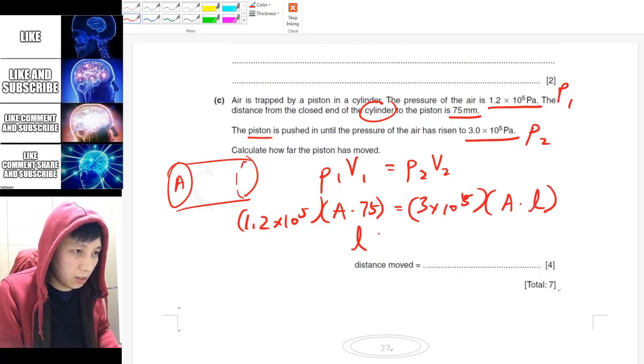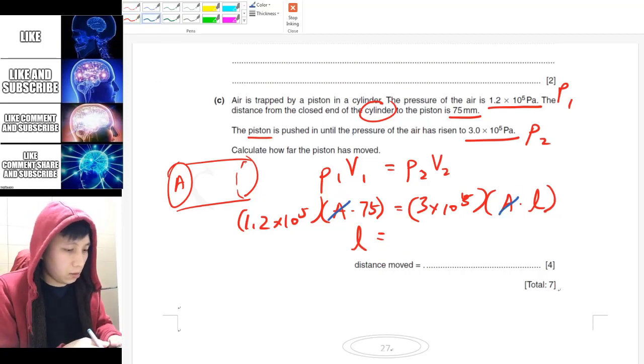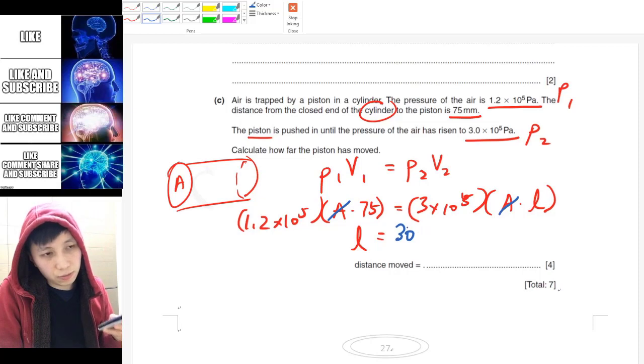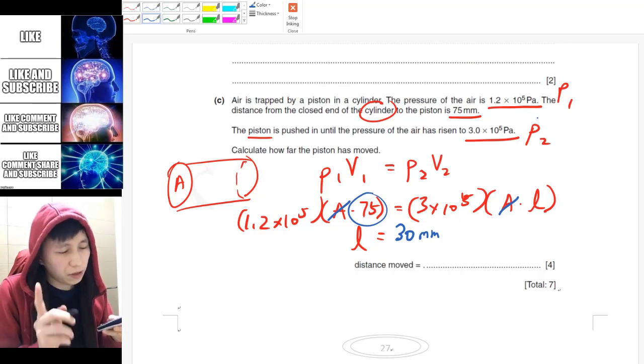And obviously A is cancelled on both sides, and so eventually you should find out L₂ to be 30, and that should match with the unit you have for the distance here, so millimeter.